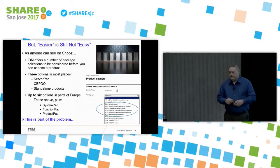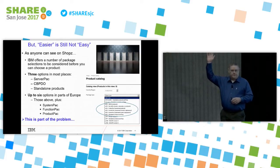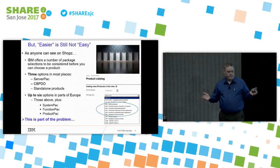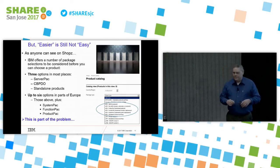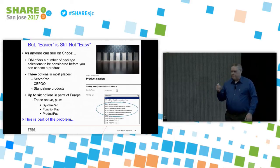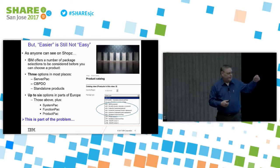Easier is still not easy. When you go to ShopZ, isn't it a great thing to pick the package you want to get something in before you can even see what products you can order in that package? This is like going to Amazon and saying, well, I want to get this by truck — it's a toothpick, but I want it to come by truck. So maybe this wasn't the best thing we could have had.